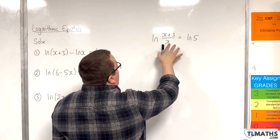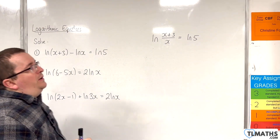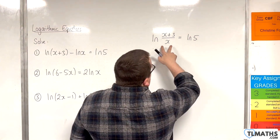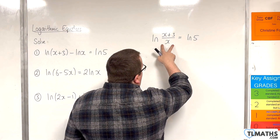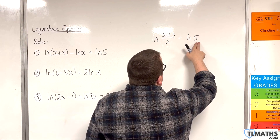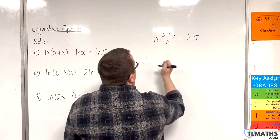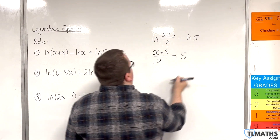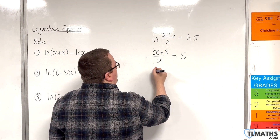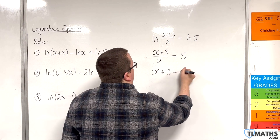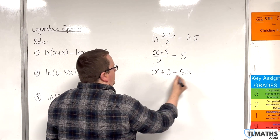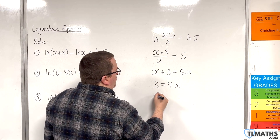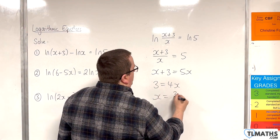Now we can raise e to the power of both sides and knock out those natural logs. Since the natural log of this equals the natural log of that, these two things must be the same, so x plus 3 over x must equal 5. Multiply up by x, subtract x from both sides, and divide through by 4, so x equals 3 quarters.